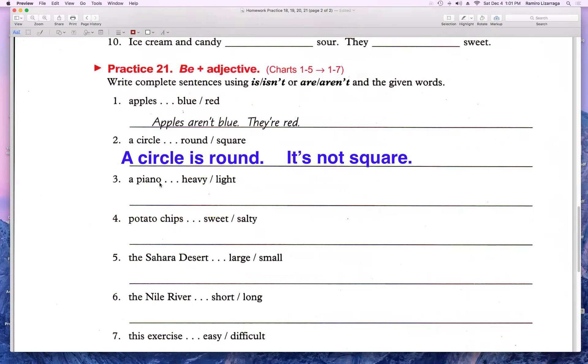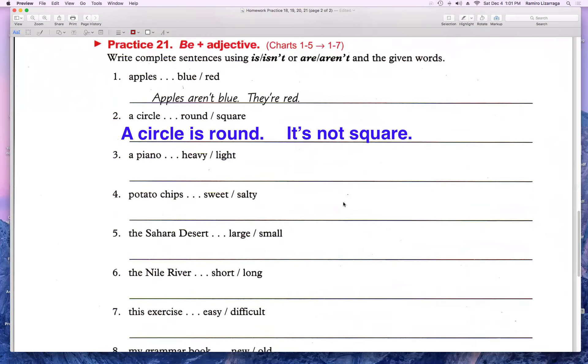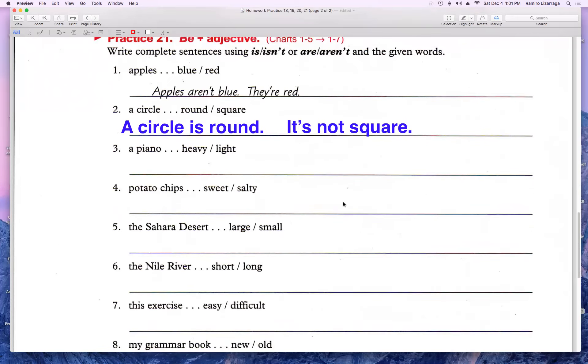Y hay que ver. El piano. Un piano es pesado. Sí. Voy a escribir. Un piano es pesado. Y otra oración cuando usando el it. No es liviano. Eso tienen que ver. Busquen las palabras en el diccionario o en traductor si no saben qué significa.